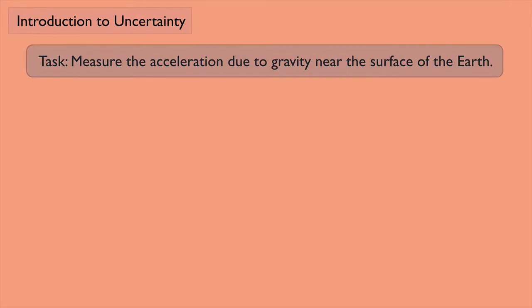Suppose you were asked to measure the acceleration due to gravity near the surface of the Earth. The accepted value is 9.81 meters per second squared, and we'll label g as the acceleration due to gravity near the surface of the Earth.